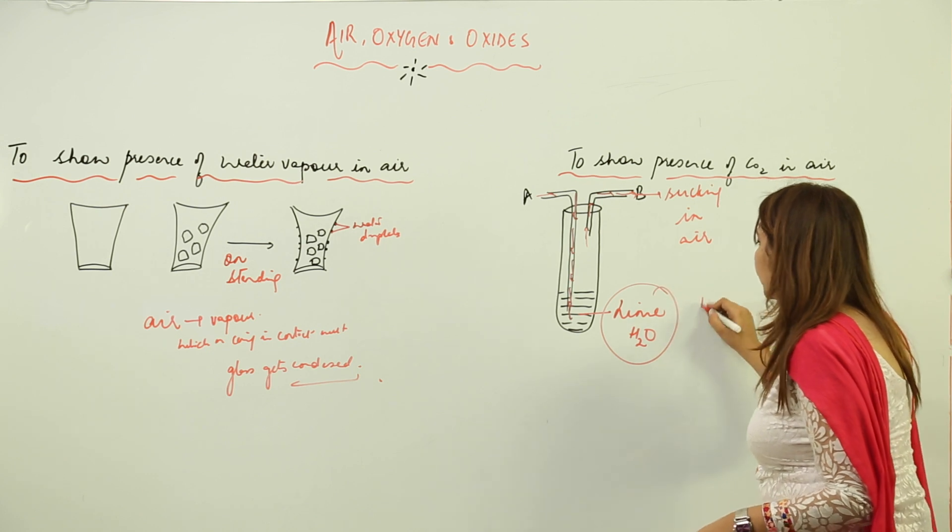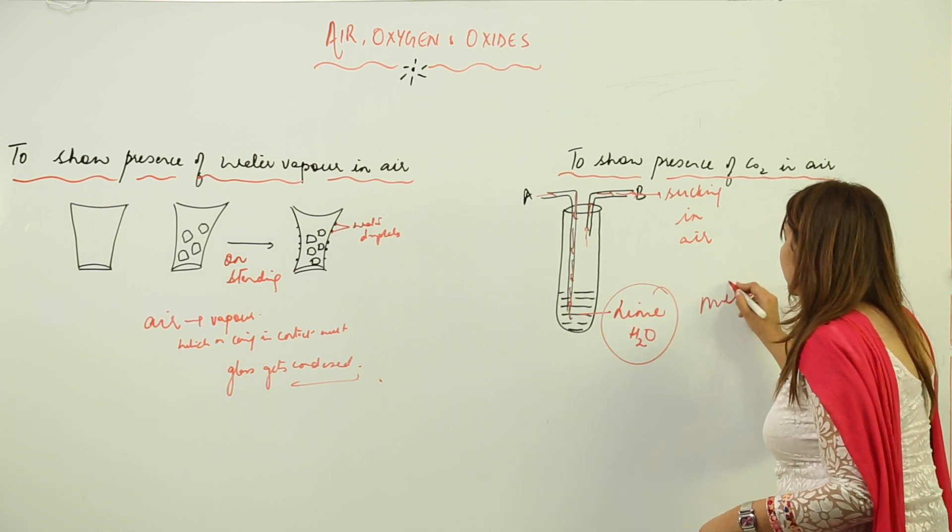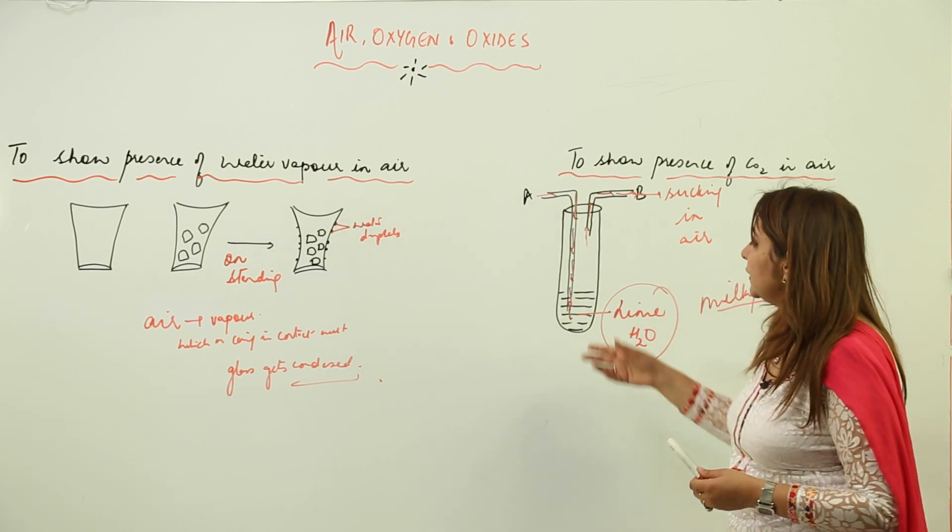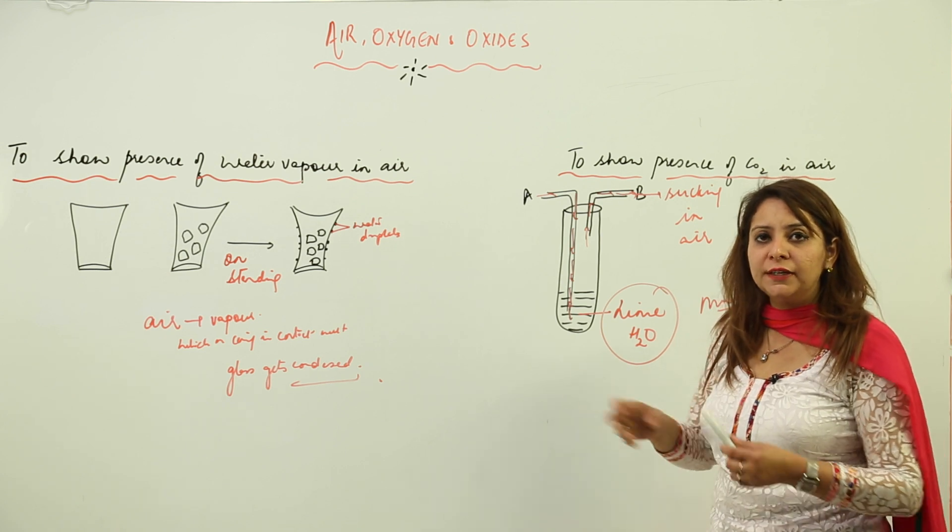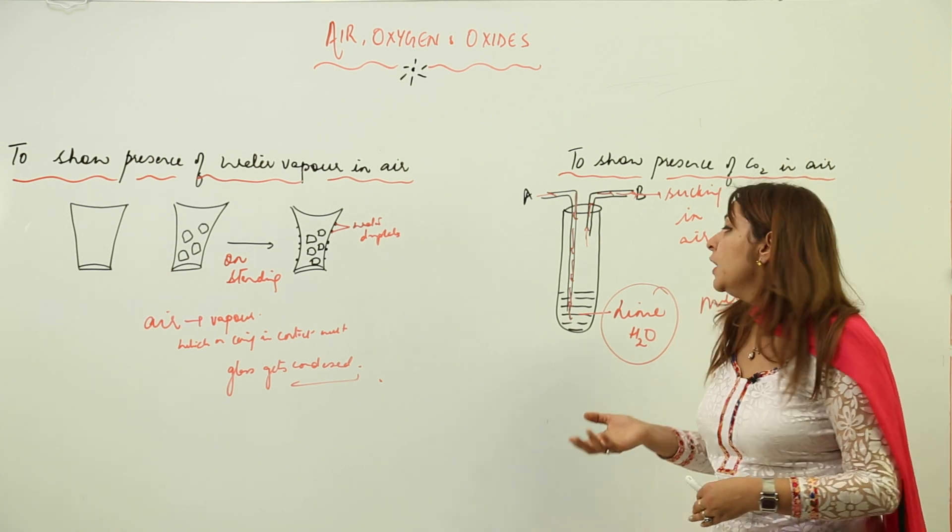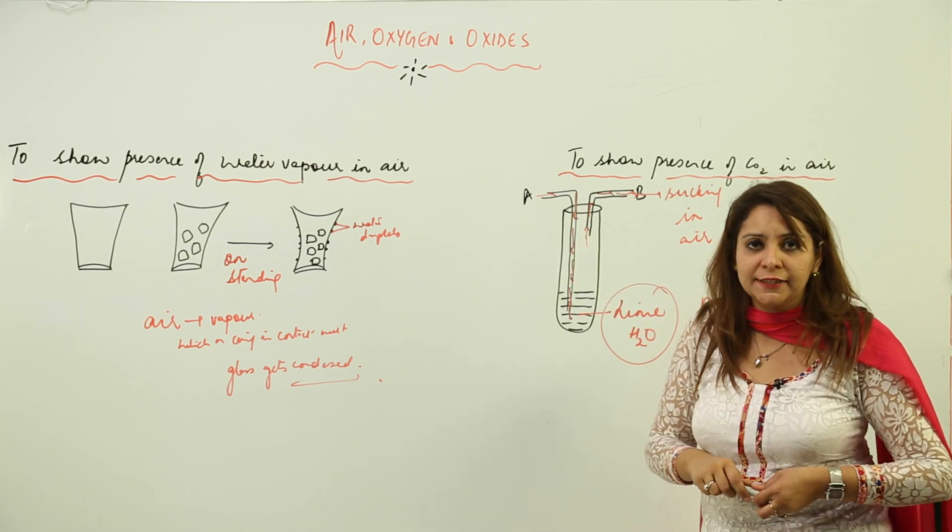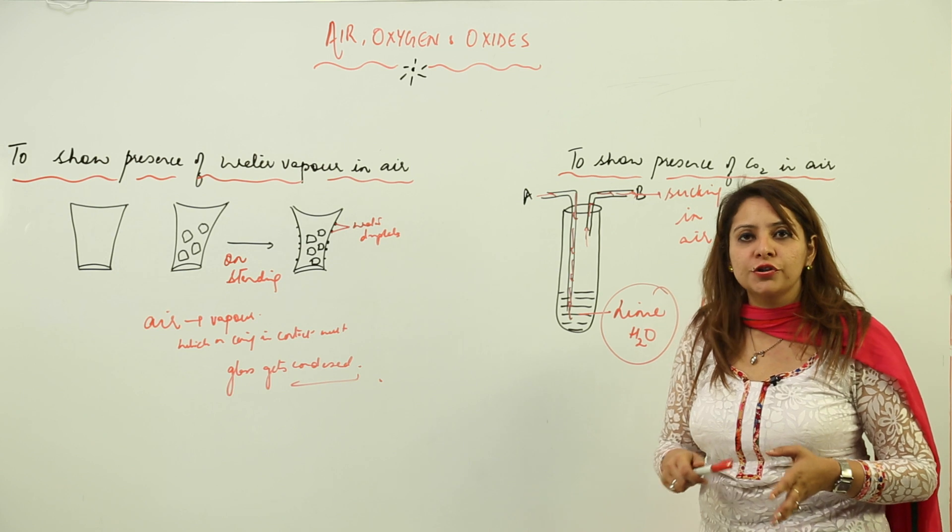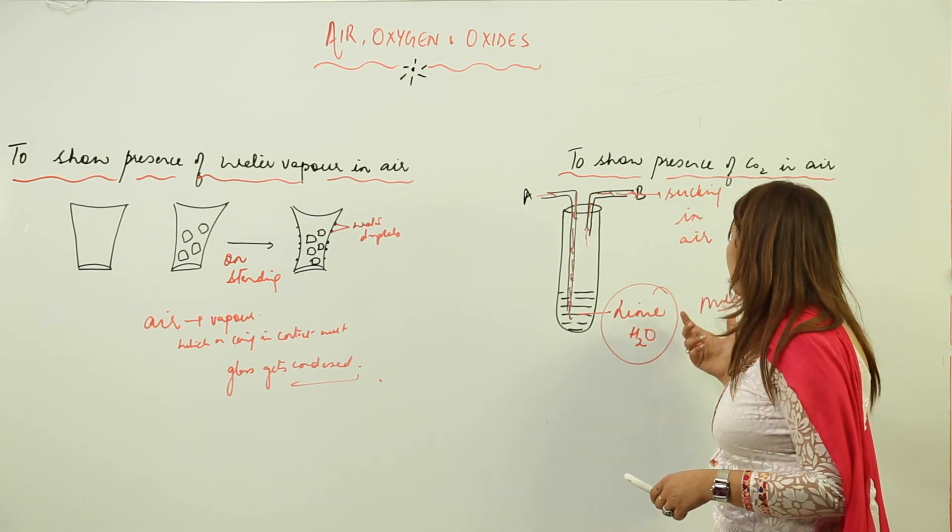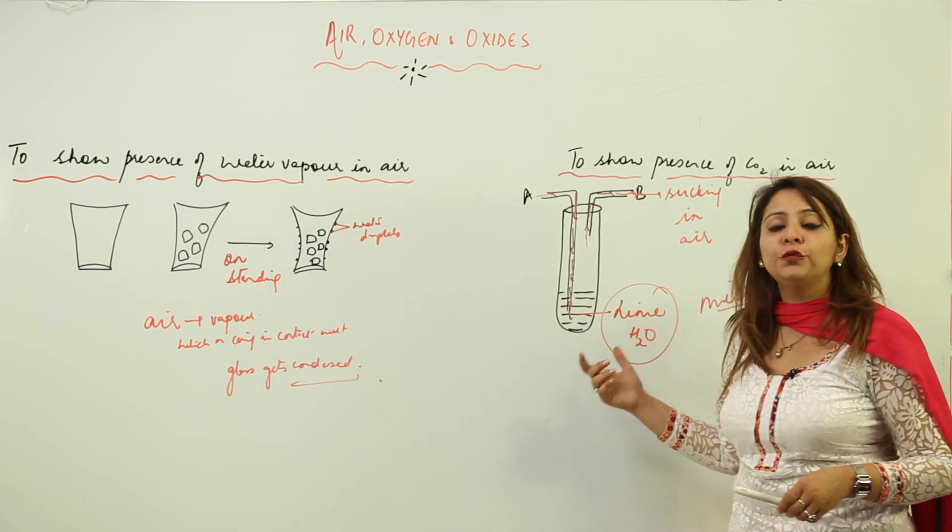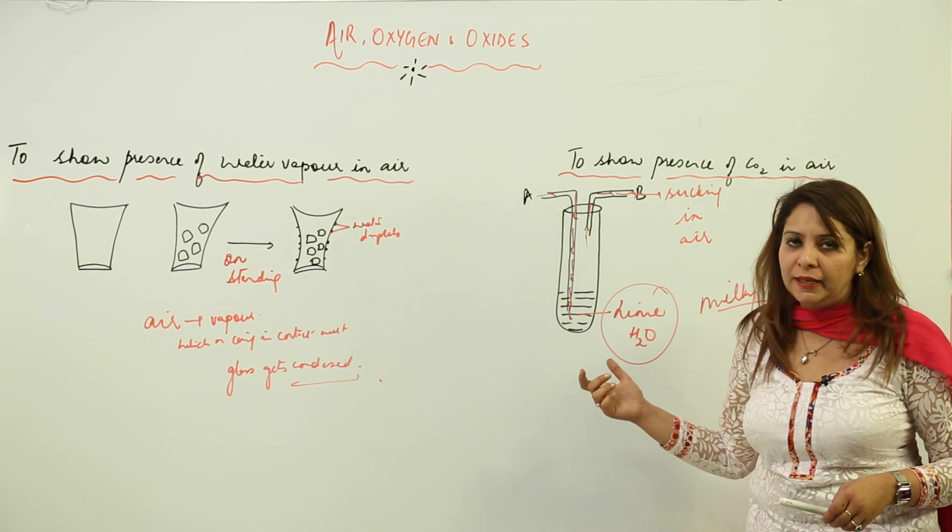It turns the lime water milky. After some time we will see that this lime water which is initially transparent turns milky. This air contains carbon dioxide, and it is a test for carbon dioxide. We know that it turns lime water milky, so this milkiness actually confirms the presence of CO2 in air.